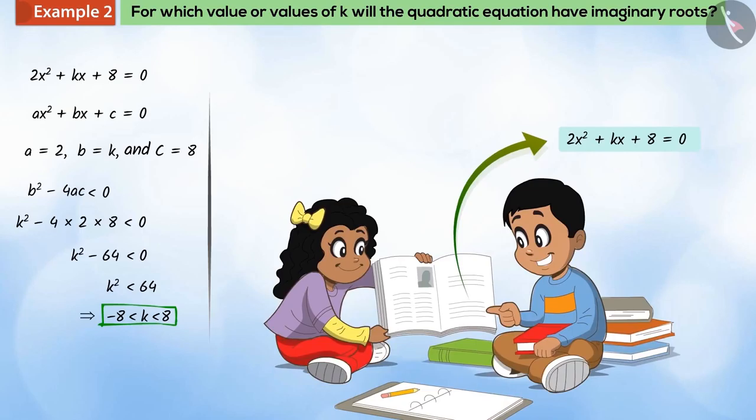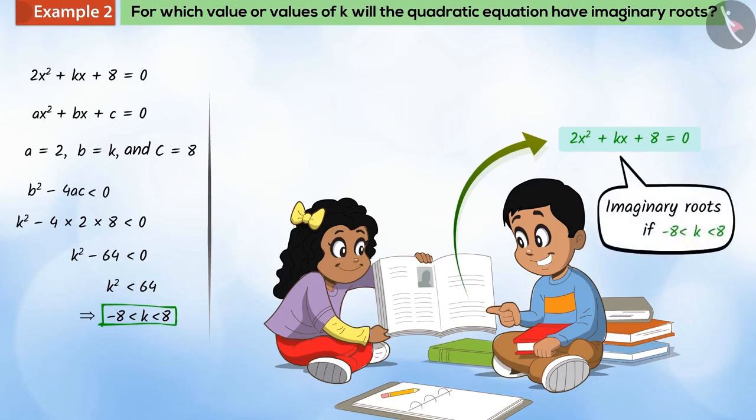So, for every value of k greater than negative 8 and smaller than positive 8, the quadratic equation 2x squared plus kx plus 8 equal to 0 will have imaginary roots.